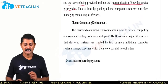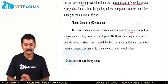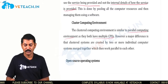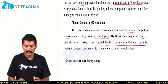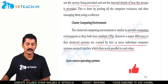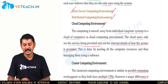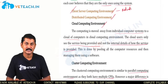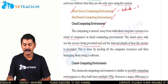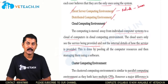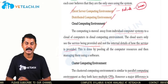Coming to the cluster computing environment: cluster computing is similar to the parallel computing environment as both have multiple CPUs. However, the major difference is that cluster systems are created by two or more individual systems merged together, which can work in parallel with each other to share information. The client-server computing environment is a network computing environment where all systems are connected, and the main operating system is served at the server, which maintains all network needs by clients — this is the client-server architecture.